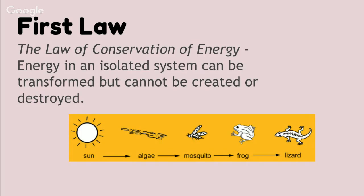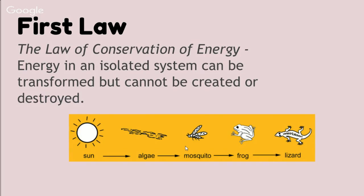For example, light can be changed into heat, kinetic energy, and potential energy, and whenever this conversion happens, some of that energy is given off as heat. Looking at this system, we have our sun and sunlight energy being converted by algae through photosynthesis into glucose. That glucose is then used in cellular respiration to create ATP, which is the cellular energy that every organism needs in all of their cells to carry out life functions. As we go through a system, we see these conversions of energy and matter, but none of it is actually totally destroyed.